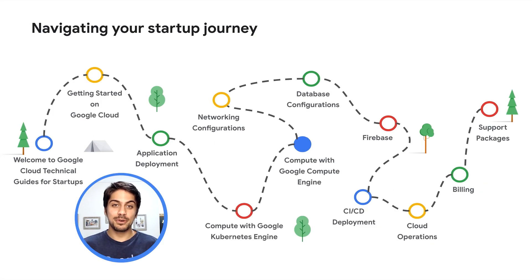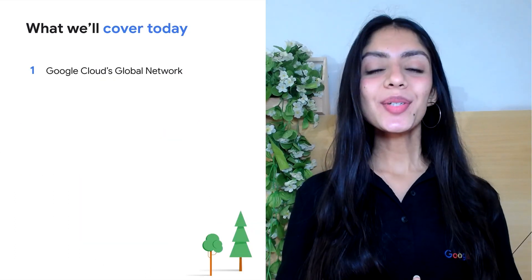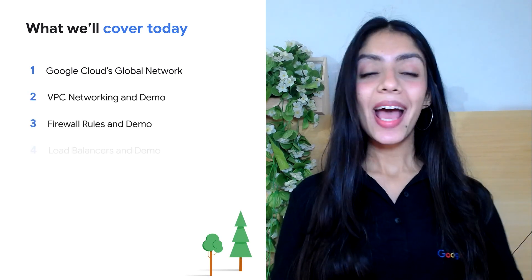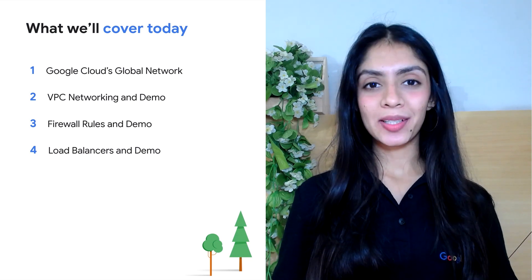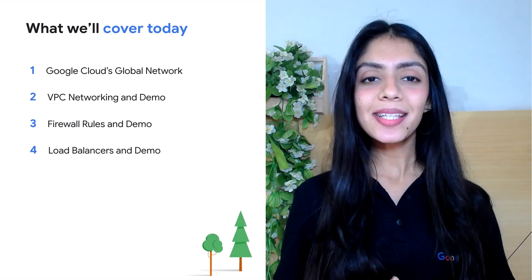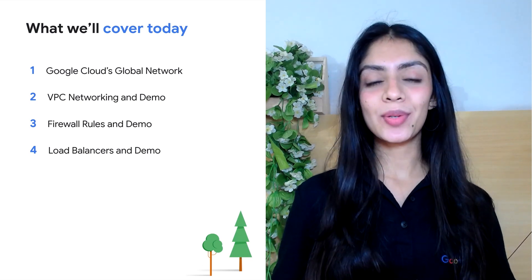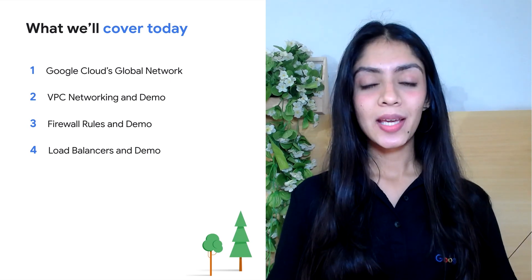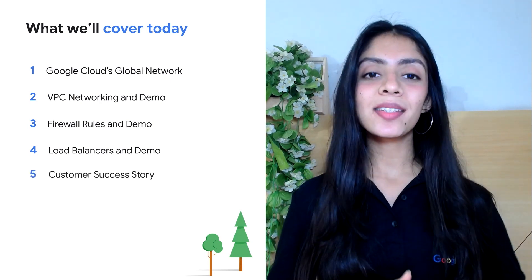In our previous video we talked about Compute Engine and how to configure it appropriately. Now we're on the sixth episode: networking configurations. In this video we're going to understand Google's global network, do an overview of VPC networking, firewall rules, and load balancing, with a few quick demonstrations based on the instances we deployed in the previous Compute Engine video. We'll then go over a customer success story and wrap up with some actionable next steps.